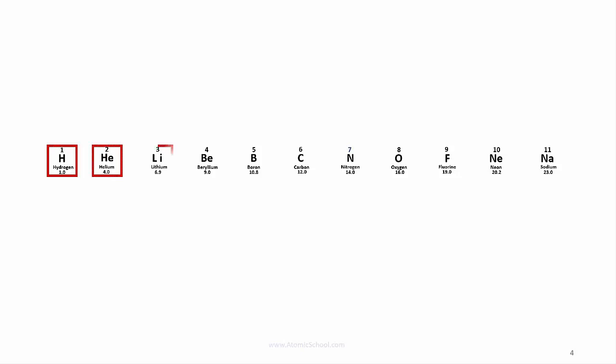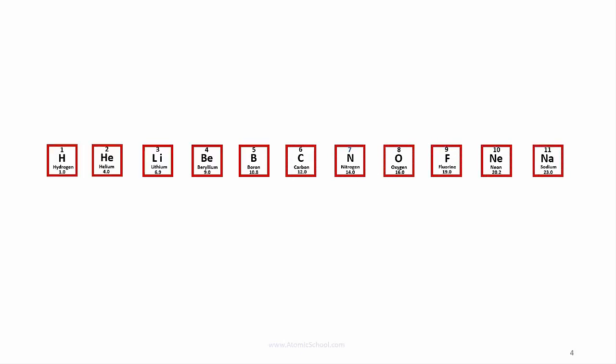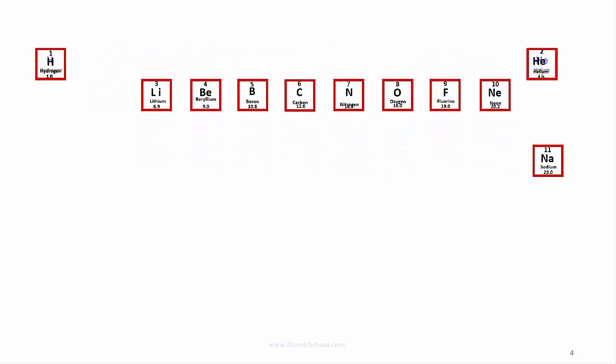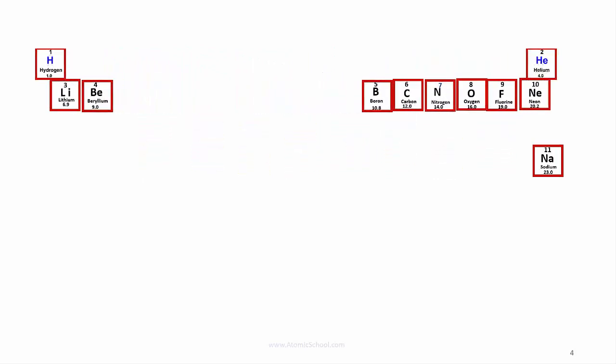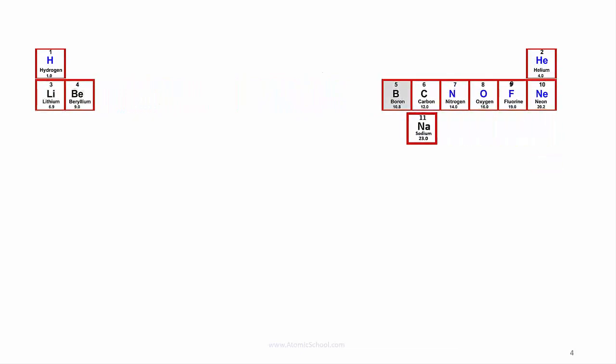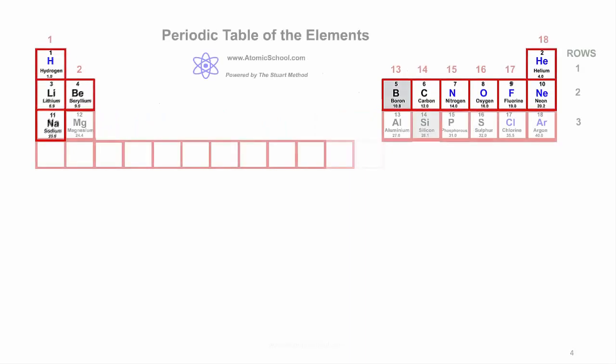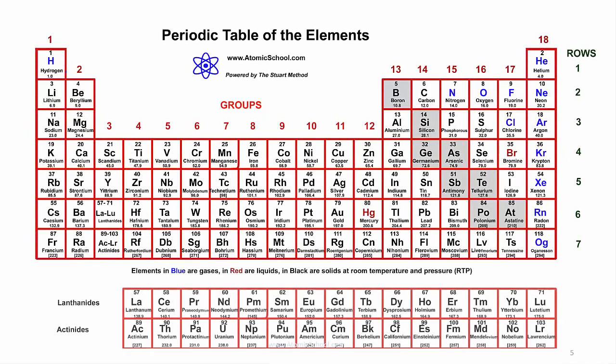Giving each element its own square, the list starts to look like the periodic table. Remember, hydrogen and helium make the first row. The next 8 elements make the second row. And sodium starts the third row. Let's wrap up with all 118 elements.